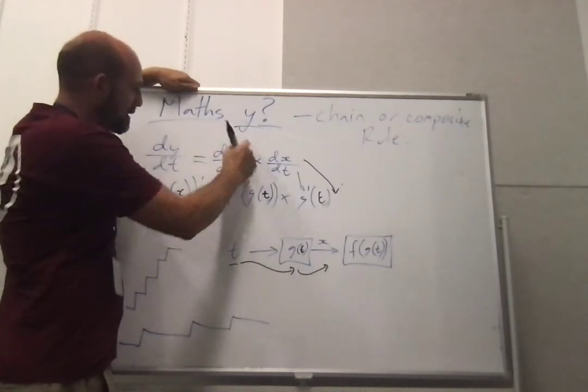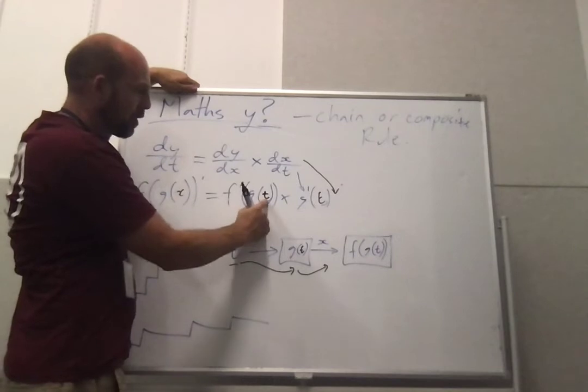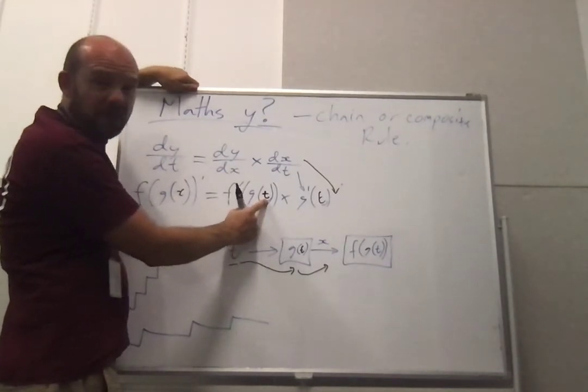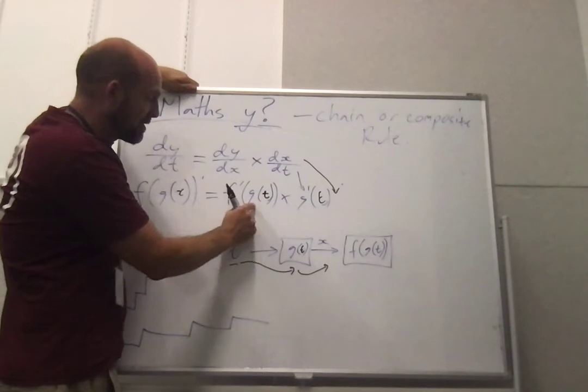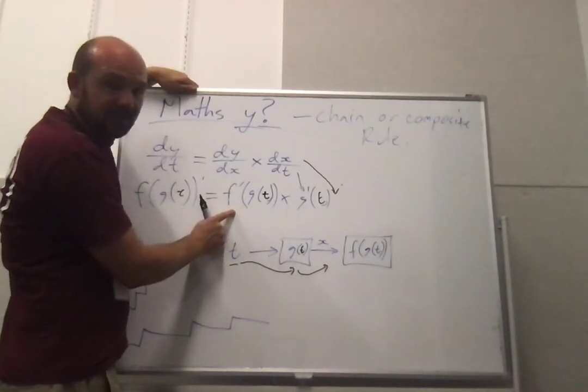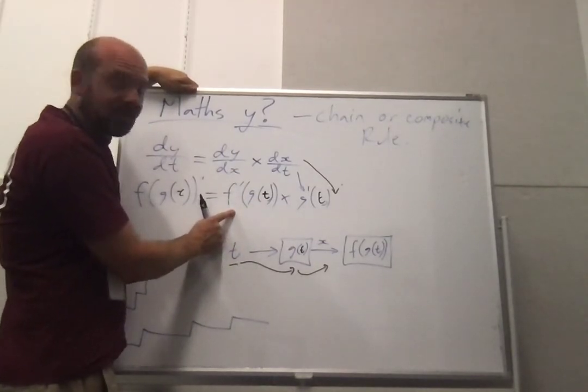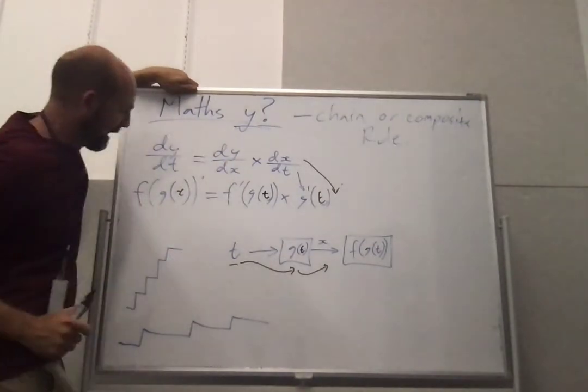So we're still talking about the steepness of the stairs, but because we're inputting into it a time we need to turn that time into where we are on the stairs and then ask this function how steep it is in that place and then we get that.